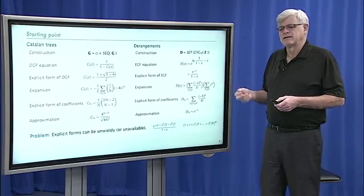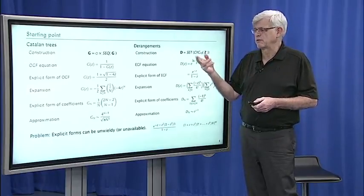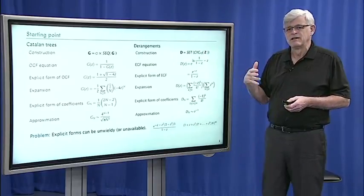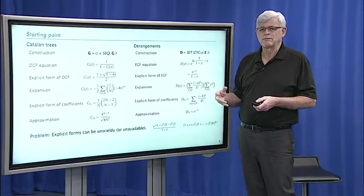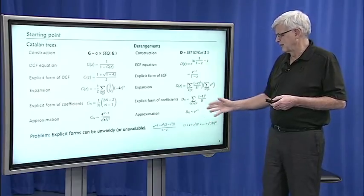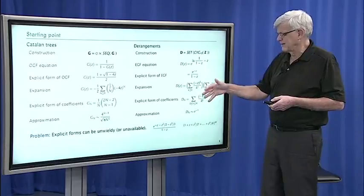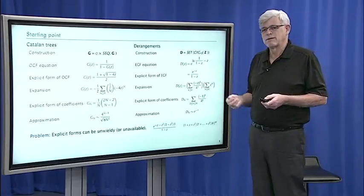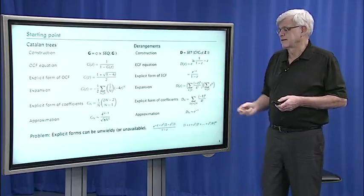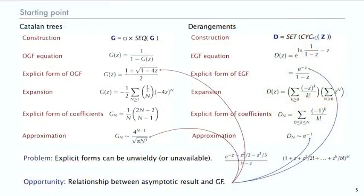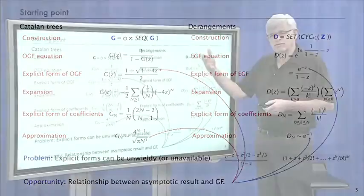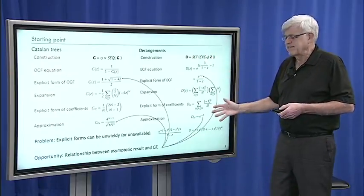Not only that, but the combinatorial constructions we use in the symbolic method, both through unlabeled and labeled objects — the whole idea is that we can use those same constructions to make variants of objects that are much more complicated, getting quite complicated forms for generating functions. But as we'll see starting in today's lecture, there's an opportunity because in the end there's a relationship between the generating function, its explicit form, and the asymptotic result.